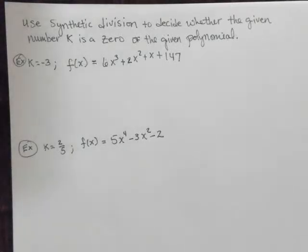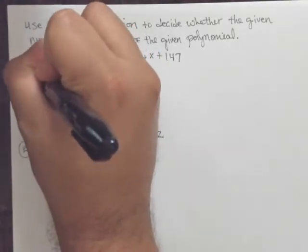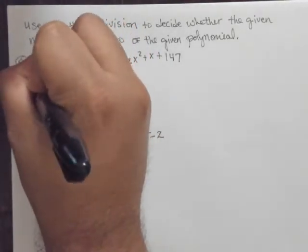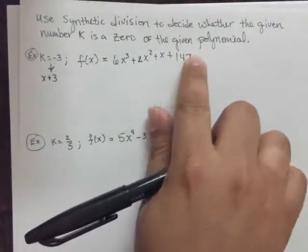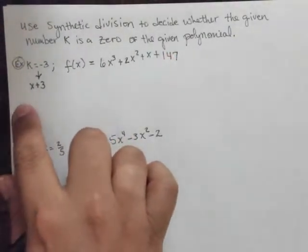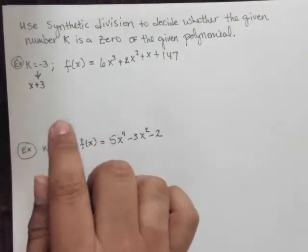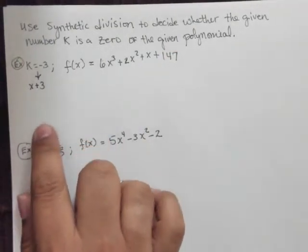Okay, in the following examples, we are asked to use synthetic division to decide whether the given number k is a zero of the given polynomial. So let's just think about this. Where did this k come from? Well, suppose that it came from something that looked like this. We're taking this and dividing it by x plus 3.